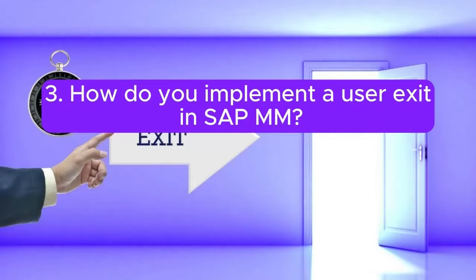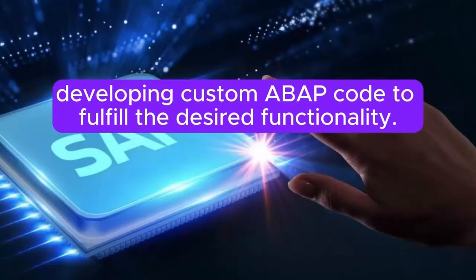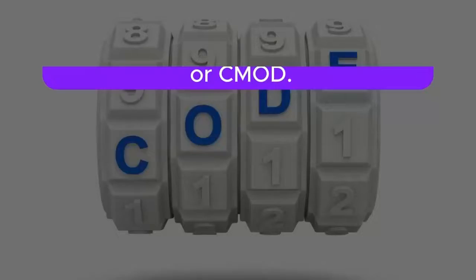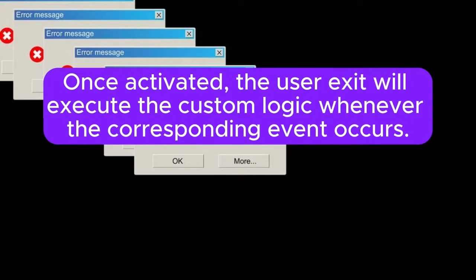How do you implement a user exit in SAP MM? Implementing a user exit in SAP MM involves identifying the appropriate exit point within the standard SAP program, and then developing custom ABAP code to fulfill the desired functionality. This code is then linked to the exit point using transaction codes SMOD or CMOD. Once activated, the user exit will execute the custom logic whenever the corresponding event occurs.